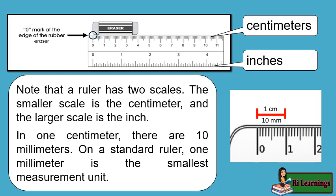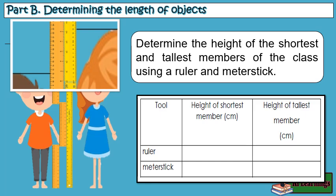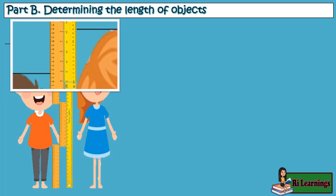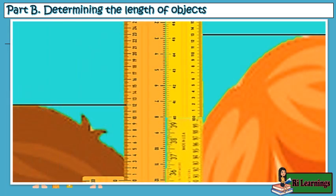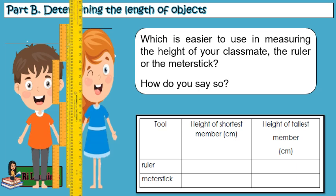5. Determine the height of the shortest and tallest members of the class using a ruler and meter stick. Which is easier to use in measuring the height of your classmate, the ruler or the meter stick? Meter stick. How do you say so? The measurements can be easily read using meter stick compared to the ruler since the ruler is much shorter.